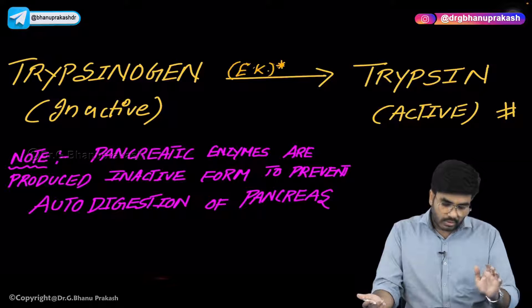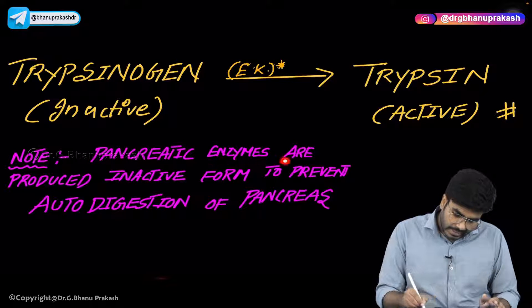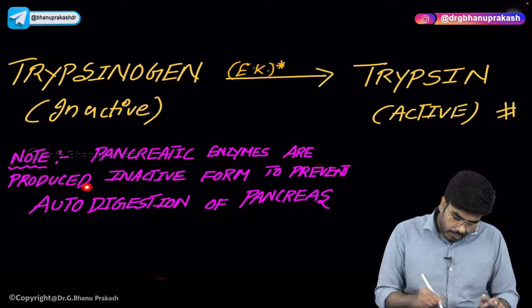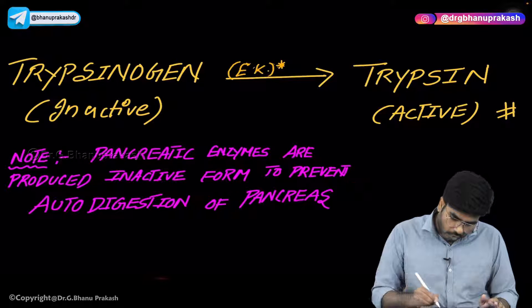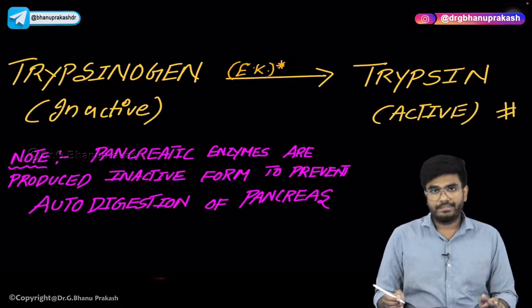Why does the pancreas produce inactive enzymes? To prevent autodigestion of the pancreas. If these enzymes were produced in an active form within the pancreas, those enzymes would digest the pancreas itself. So pancreatic enzymes are produced in an inactive form to prevent autodigestion of the pancreas.